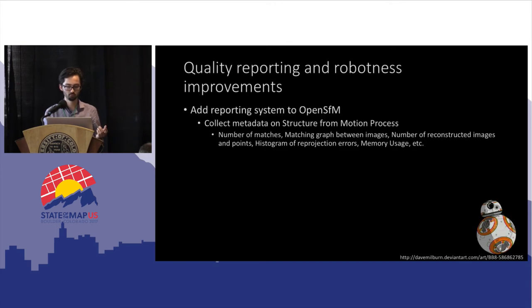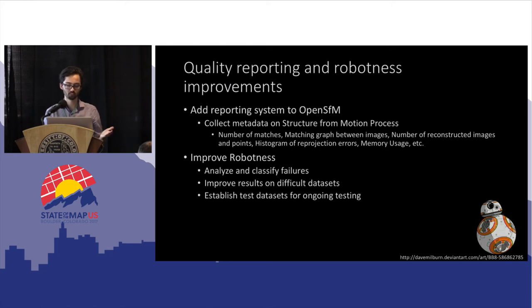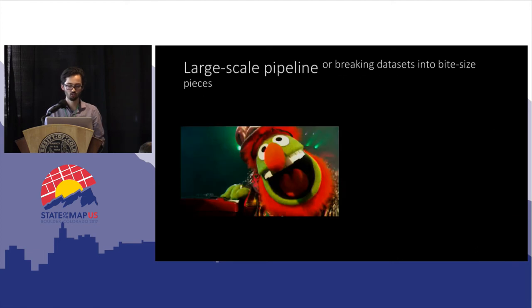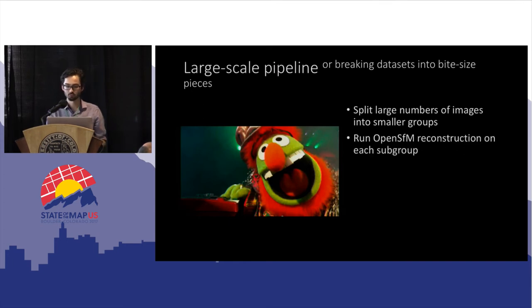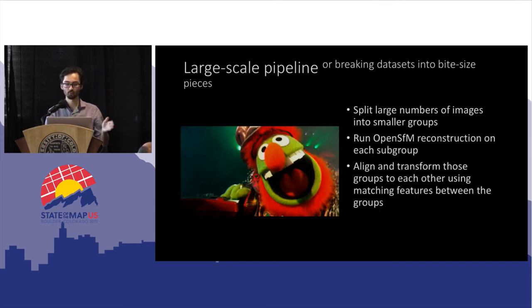Quality reporting and improving robustness: we want to add a reporting system showing how accurate the matches are, how many matches, what the error rates are. We also want to classify failures and find where improvements are needed. For large scale — getting 20,000 or 200,000 images to run — we break it into bite-sized pieces: split into smaller groups, run OpenSFM structure from motion reconstruction on each subgroup, then align all together into a single product.